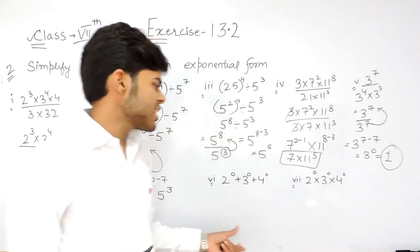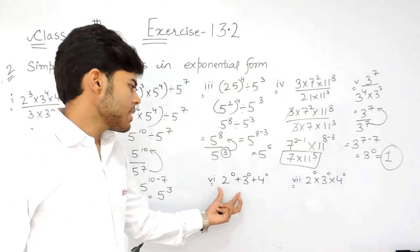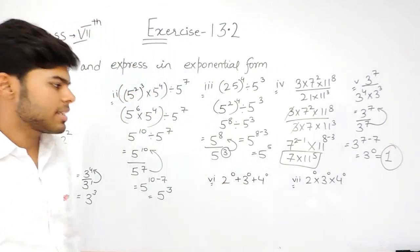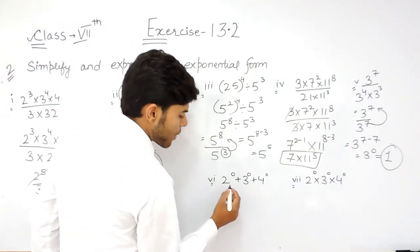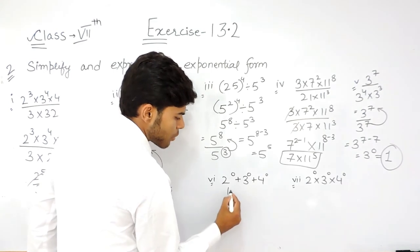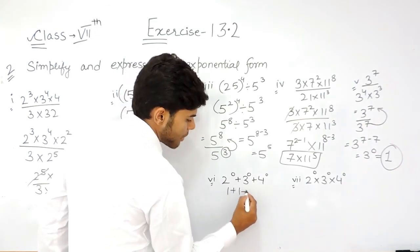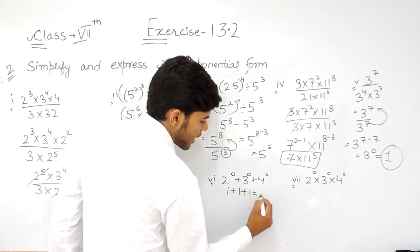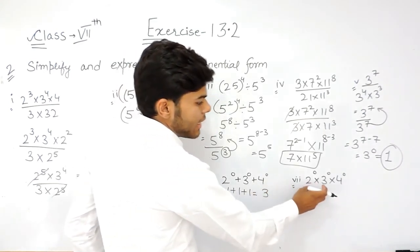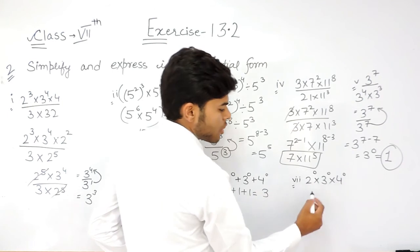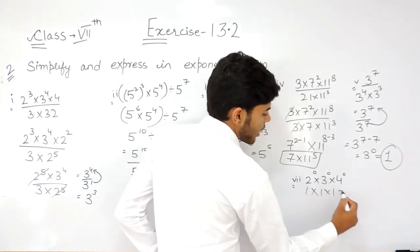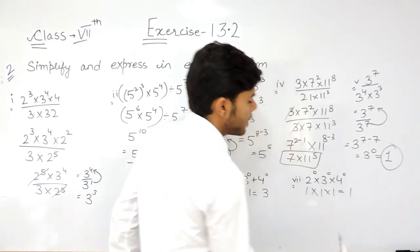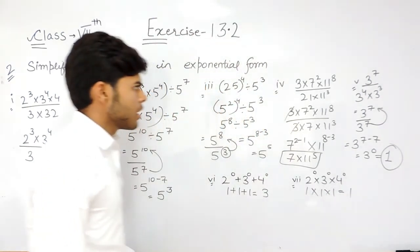So we will use this same property — anything to the power 0 is 1 — in part 6 and part 7 as well. Anything to the power 0 is 1, so 1 plus 1 plus 1 gives us the answer 3. And anything to the power 0 is 1, so 1 into 1 into 1 gives us the answer 1.